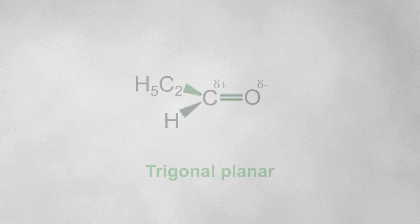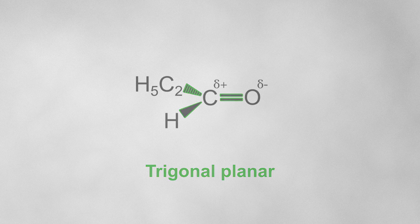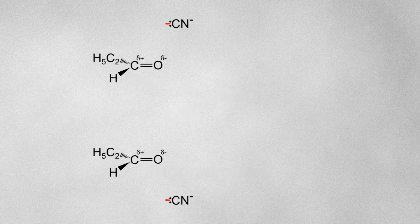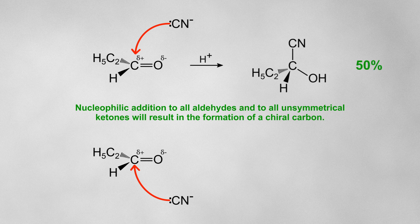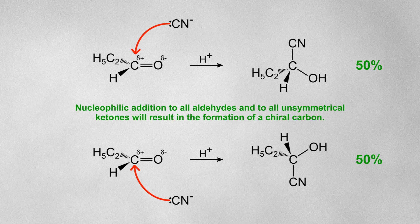An important thing to note with nucleophilic addition is that the carbonyl is trigonal planar, and so it's flat. This means that the nucleophile is equally likely to attack from either side of the carbonyl. If this addition results in the formation of a chiral carbon, 50% of the products will be one optical isomer and 50% will be the other.